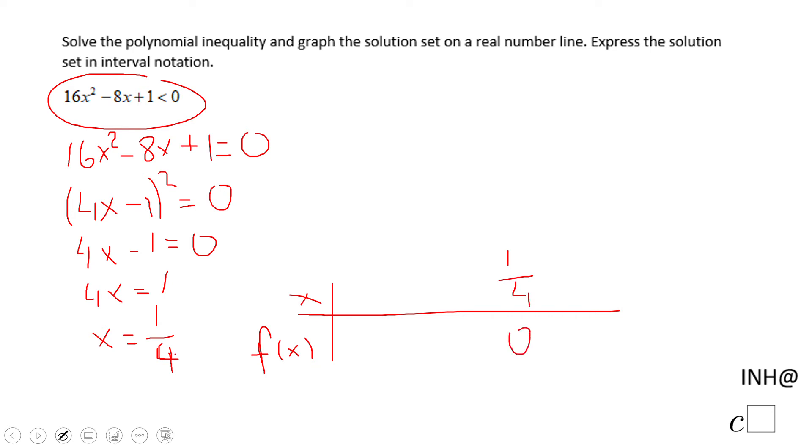The function is zero at 1/4, and I'm going to pick a number greater than 1/4, like 1. If you put that 1 here, 4 times 1 is 4, minus 1 is 3, 3 squared is 9, which is a positive number.